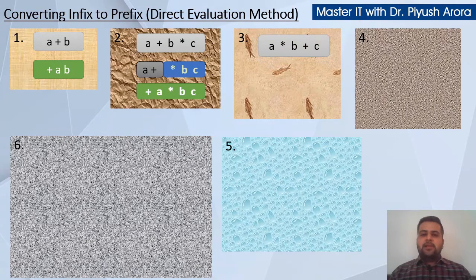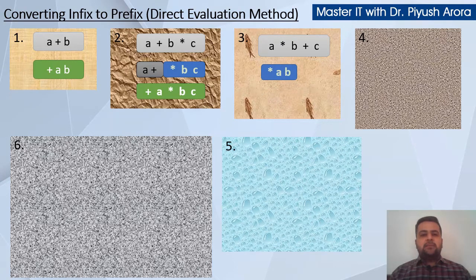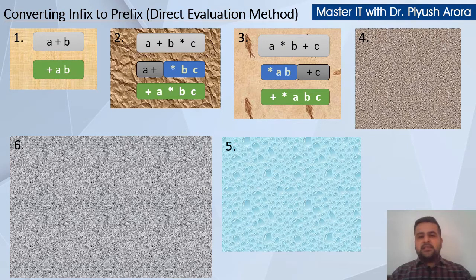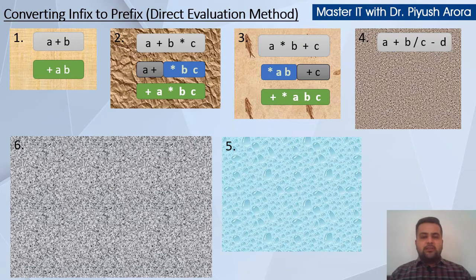Next example: a multiplication b plus c. First we do a multiplication b, which gives multiplication a b, and then plus c. Assume multiplication a b as x, so x plus c becomes plus x c. So plus comes, x is multiplication a b, and then c. You assume any one part as x, y, or z to evaluate it, but you don't need to write it.